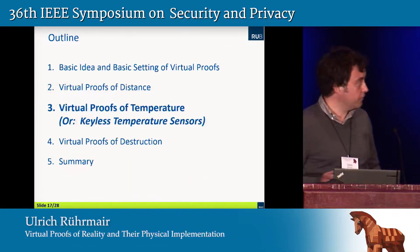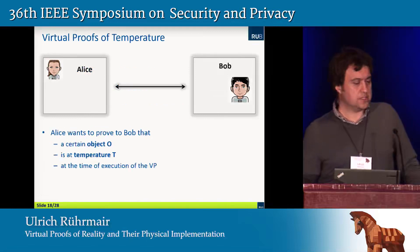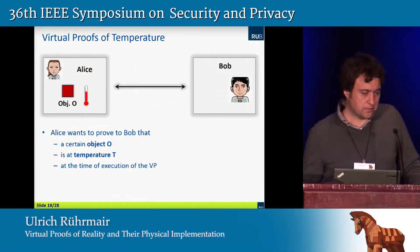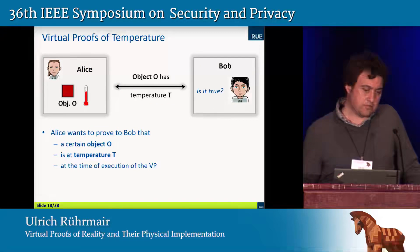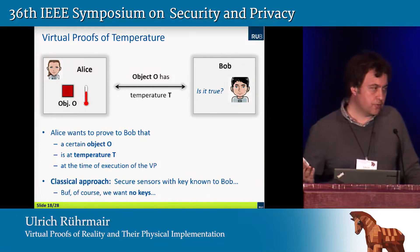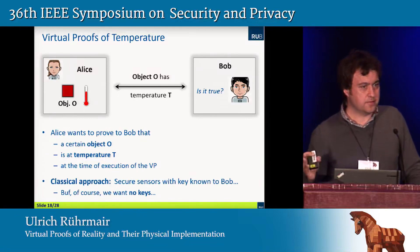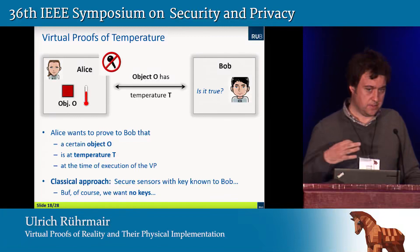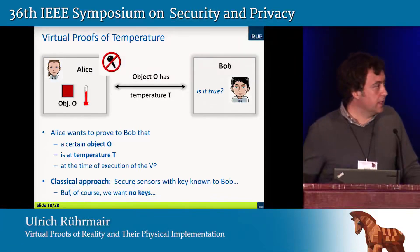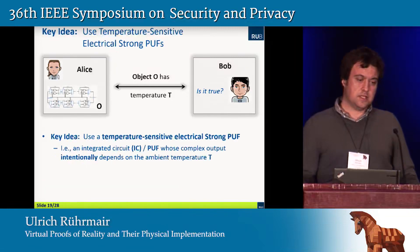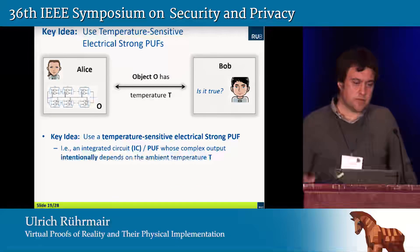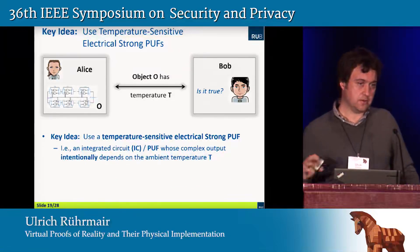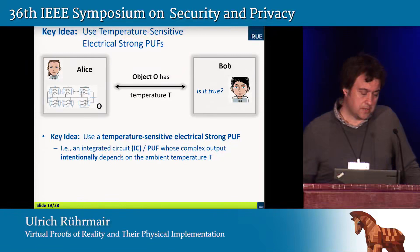Let's move on to Virtual Proofs of Temperature. The idea is that Alice claims to Bob that a certain object in her system is at a certain temperature level at the time of execution of the virtual proof. There's a classical approach using a trusted sensor environment with a secret key known to Bob, but in our setting we don't want any classical keys, so we have to think about new solutions. The key observation was that one can use temperature-sensitive electrical strong PUFs — a PUF type that can be used in the virtual proof.